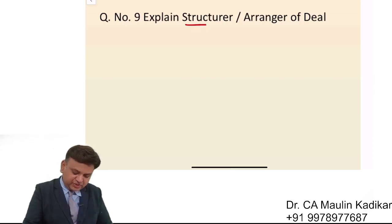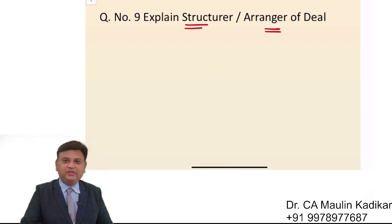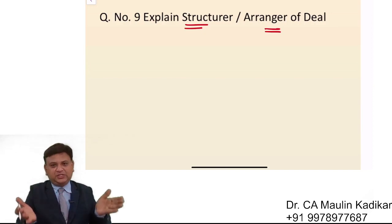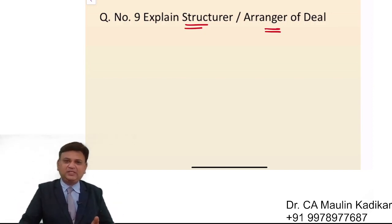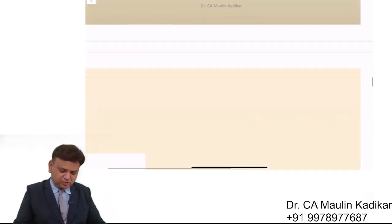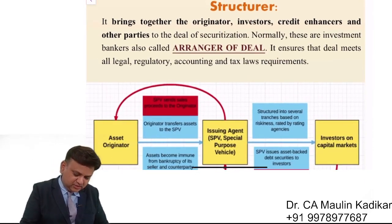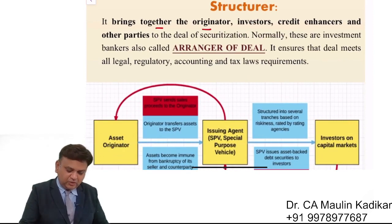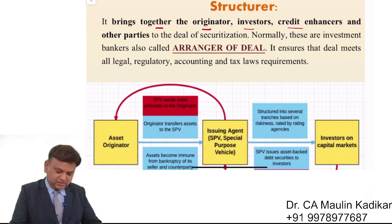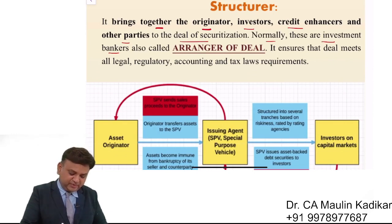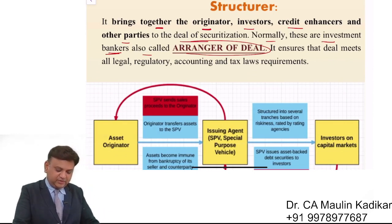Next, the structurer or arranger of the deal — ultimately it is done by the originator only, but still it is called the structurer. It brings together the originator, investor, credit enhancer, and other parties to the deal organization. Normally these are investment bankers, also called the arranger of the deal.